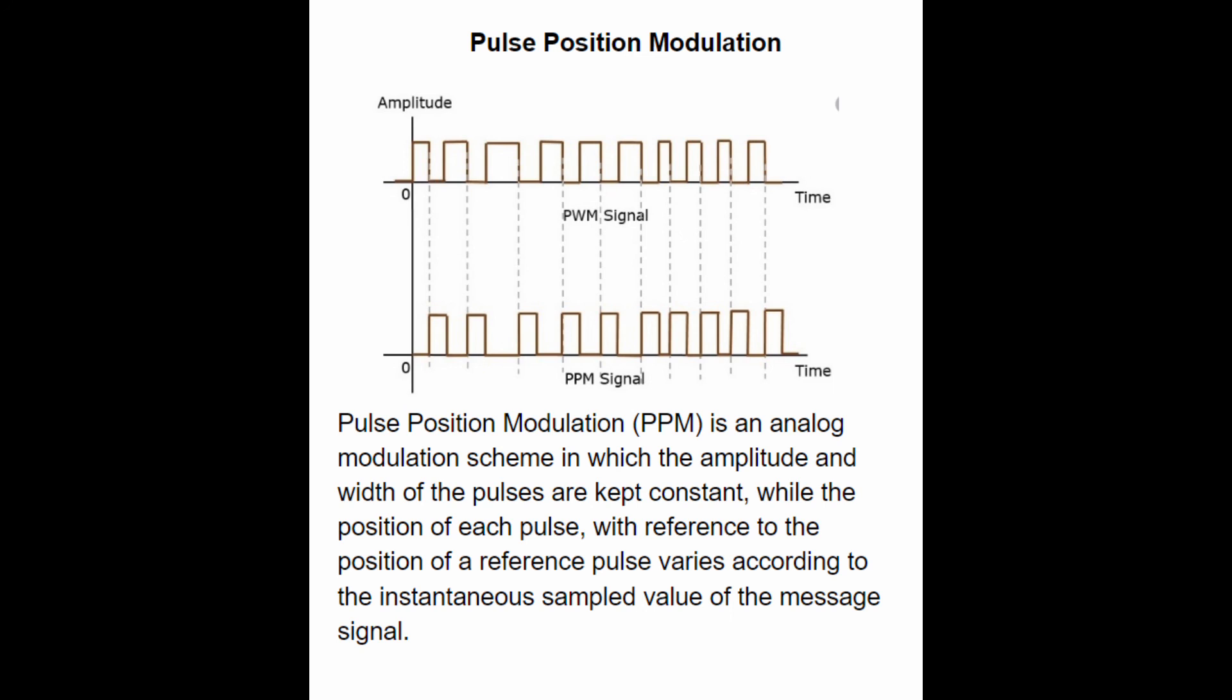Pulse Position Modulation is an analog modulation scheme in which the amplitude and width of the pulse are kept constant, while the position of each pulse with reference to the position of a reference pulse varies according to the instantaneous sampled value of the message signal.